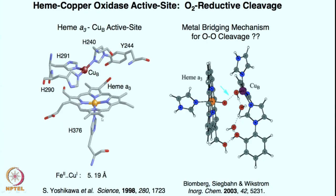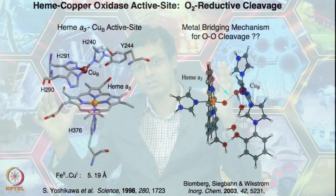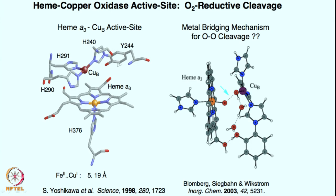The active site in that heme copper oxidase, or cytochrome C oxidase — the main active site — is this porphyrin iron center as well as this copper center. This copper center is similar to one of the copper centers of hemocyanin or tyrosinase with 3 histidines, but with a twist: the addition of a tyrosine-histidine crosslink phenol appended right there.